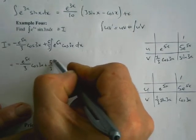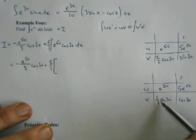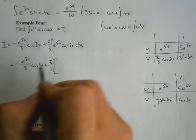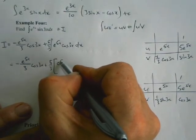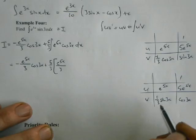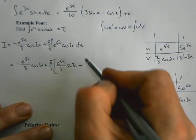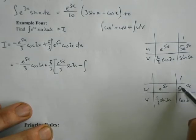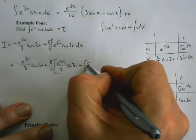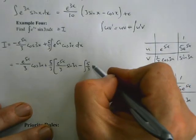So all together I now have minus e to the 5x over 3 cos 3x plus 5 thirds of this integral, which is u times v, which will give me e to the 5x over 3 sin 3x.